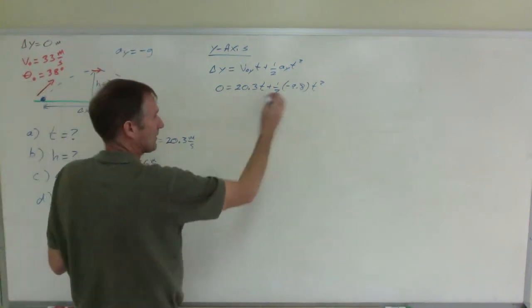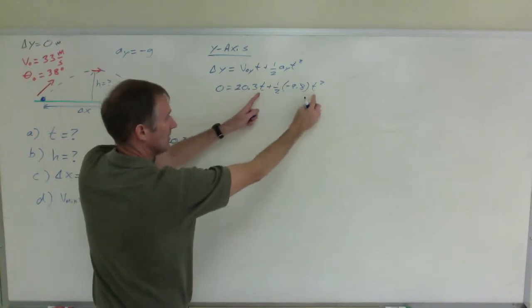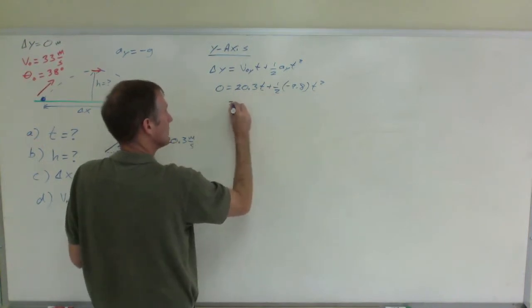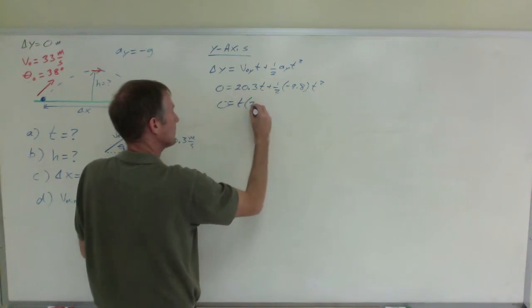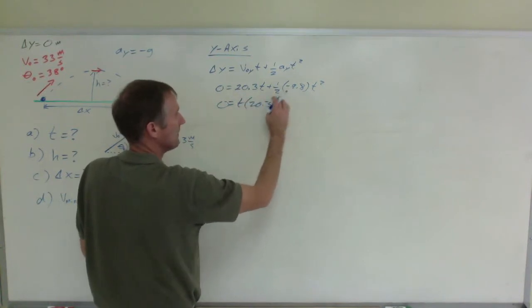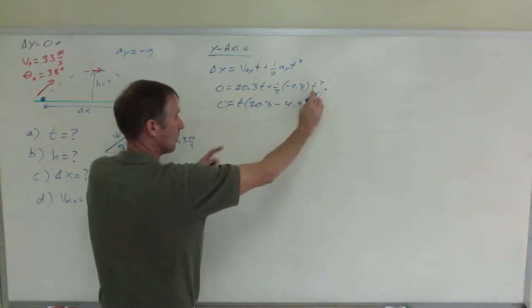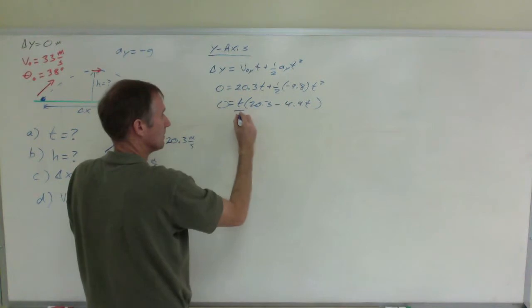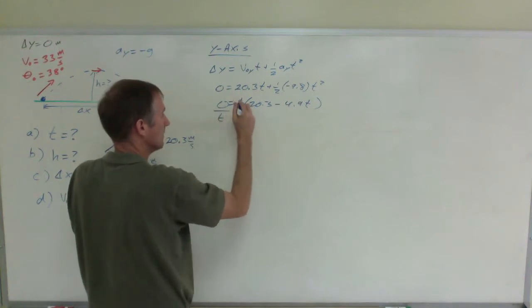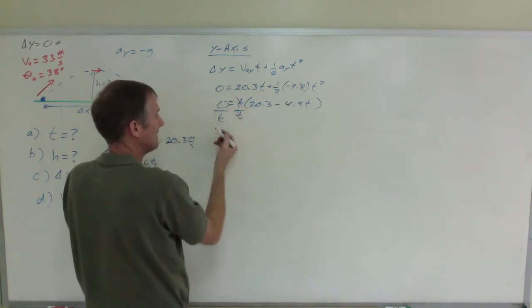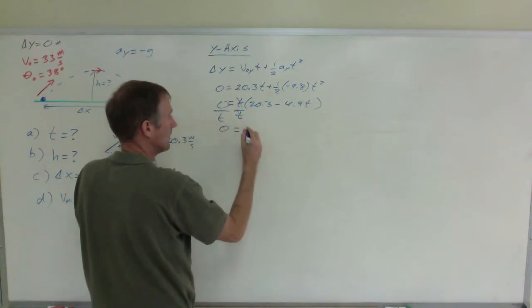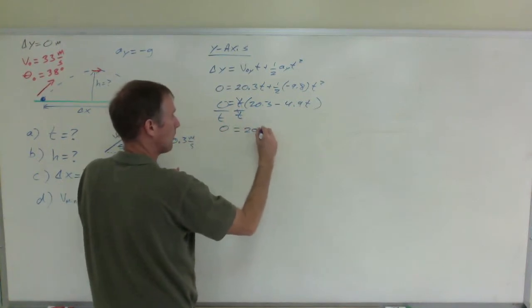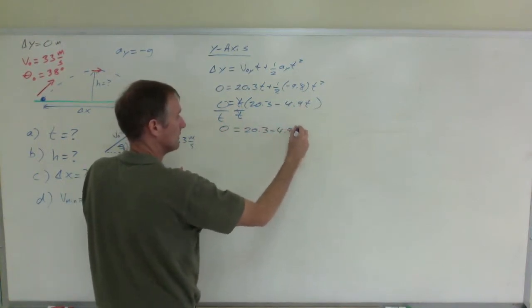Now, I can factor out a t because I have t here, and this is t times t. So zero equals t times 20.3. Half of negative 9.8 is 4.9. I still have a t left over because I factored one out. I can divide through by t. It cancels. Zero divided by t is still zero. So zero equals 20.3 minus 4.9 t.